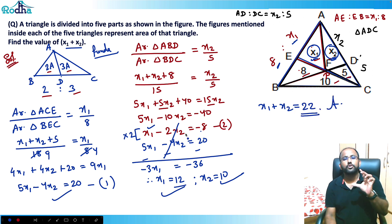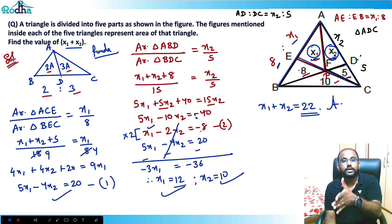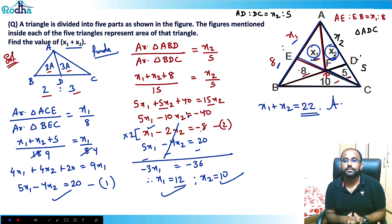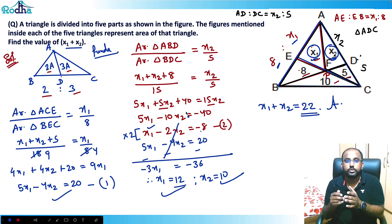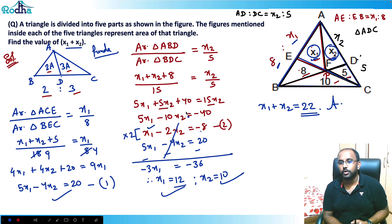It's a beautiful concept — a great application of the area-of-triangle ratio property. When a cevian divides a triangle, the base and area are both divided in the same ratio. A superb question — I hope all of you enjoyed it. Note it down in your copy.